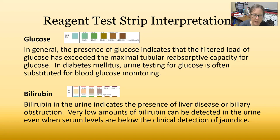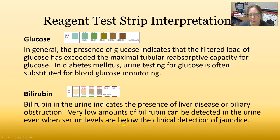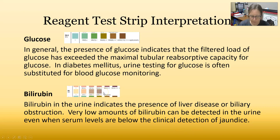For bilirubin: bilirubin in the urine indicates the presence of liver disease or biliary obstruction. Very low amounts of bilirubin can be detected in urine even when serum levels are below the clinical detection of jaundice — this is what makes this test particularly useful. Here are the color squares for bilirubin on the strip.